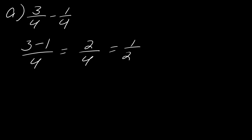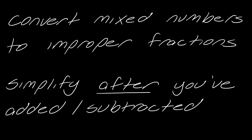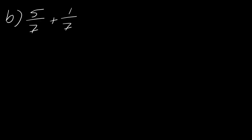The other thing I want to remind you of is that if we see any mixed numbers, we're going to convert them to improper fractions — and again, simplify after you've added or subtracted. Those are the two things to keep in mind. For 5 sevenths plus 1 seventh: this one's nice and straightforward. If I just take 5 plus 1, that's 6, and then the 7 just comes along for the ride.